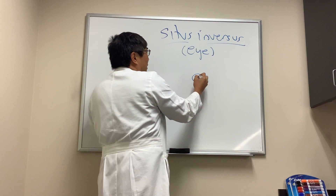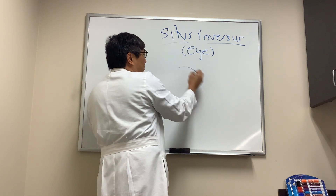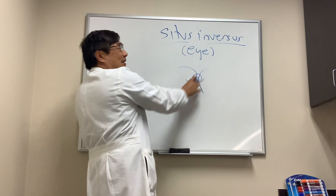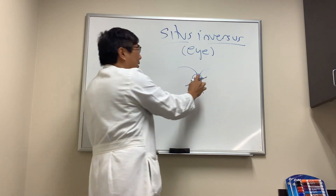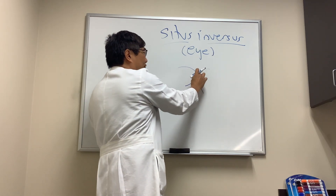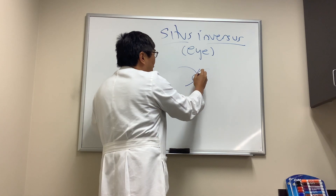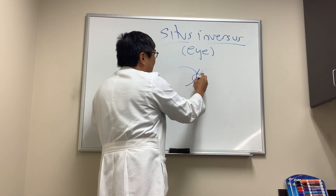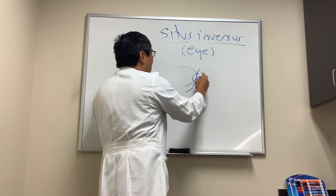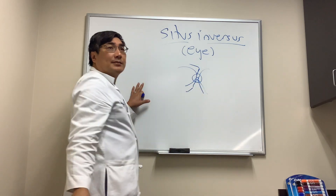A normal optic nerve has blood vessels that make a C-shaped pattern, and the bifurcation usually occurs before it leaves the disc head. So we have the artery and the vein, and normally that looks like this.